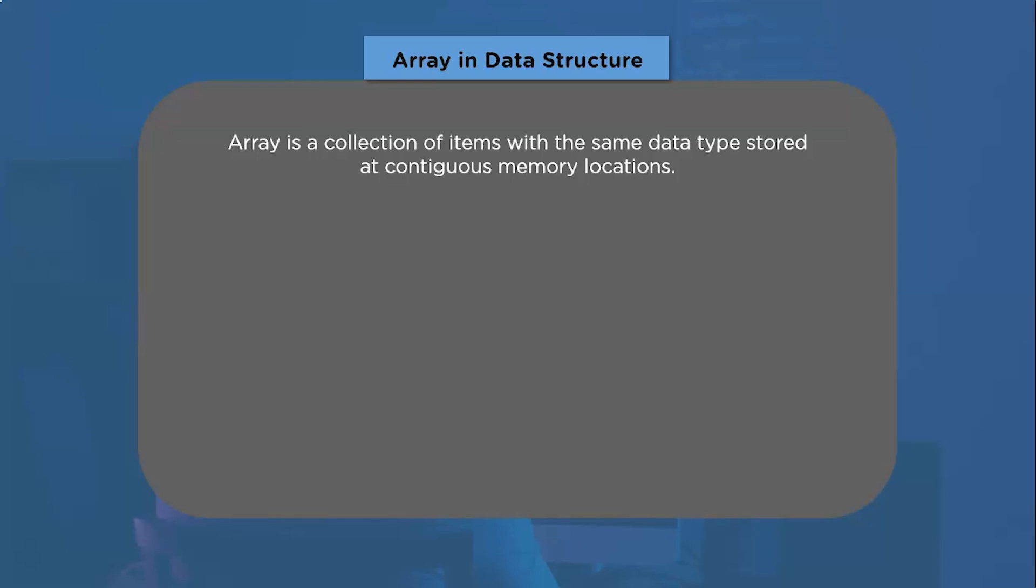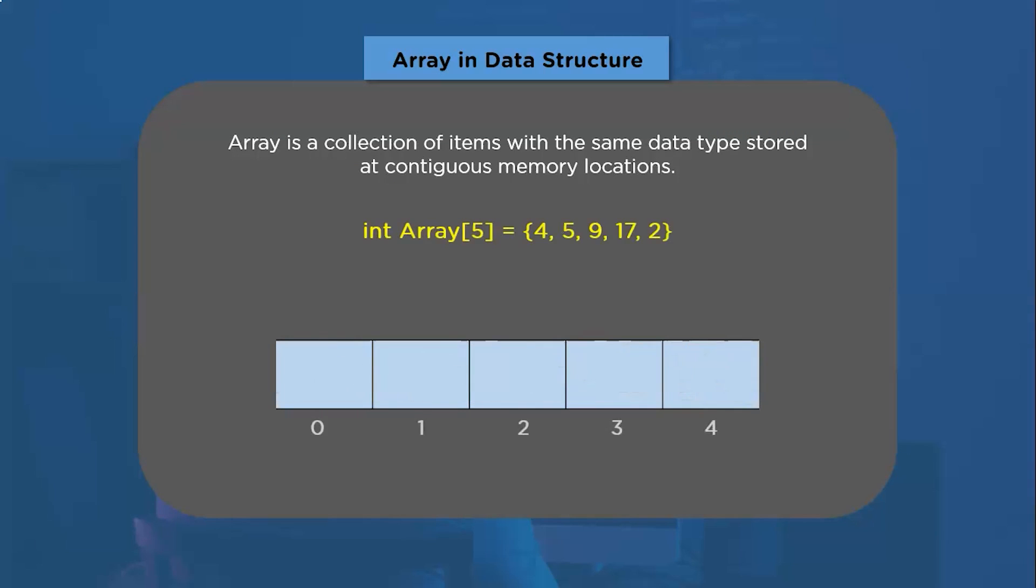The command that we use to declare an array in data structure consists of three fields: the first one is data type, the second one is name of an array, and the third one is its size. For example, int array 5. Further, if you want to pass some values into an array, you can pass the list of elements as shown. Once we do that, an array structure gets created with the data elements at contiguous memory locations.